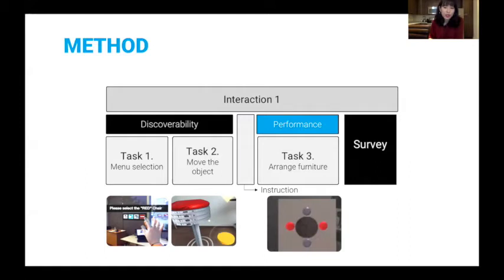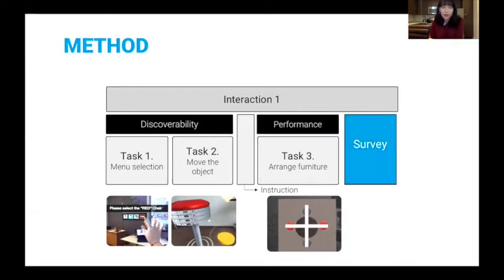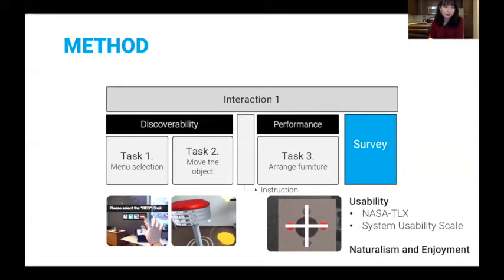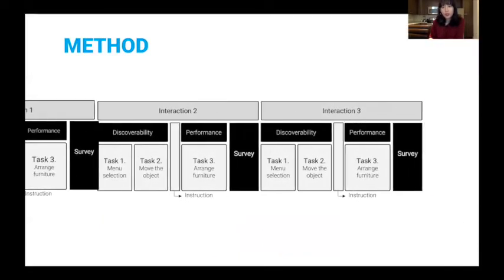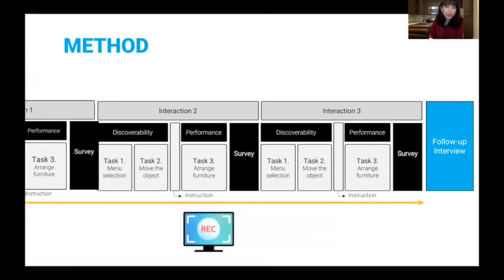We asked them to arrange the chairs and table so that each chair is perpendicular to each other. And after this, we gave them a survey questionnaire that asked about usability and perceived level of naturalism and enjoyment. This process was repeated for the second interaction and third interaction, and at the end, we had a follow-up interview. The entire session was video recorded because what we were interested in was the gestures people are using.